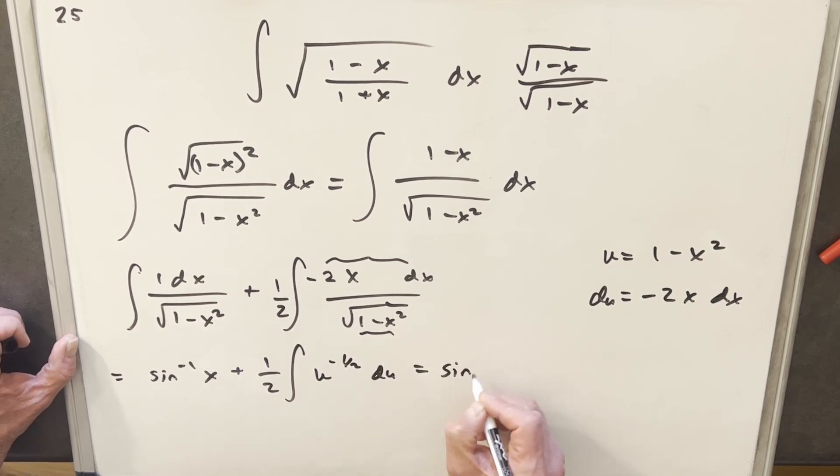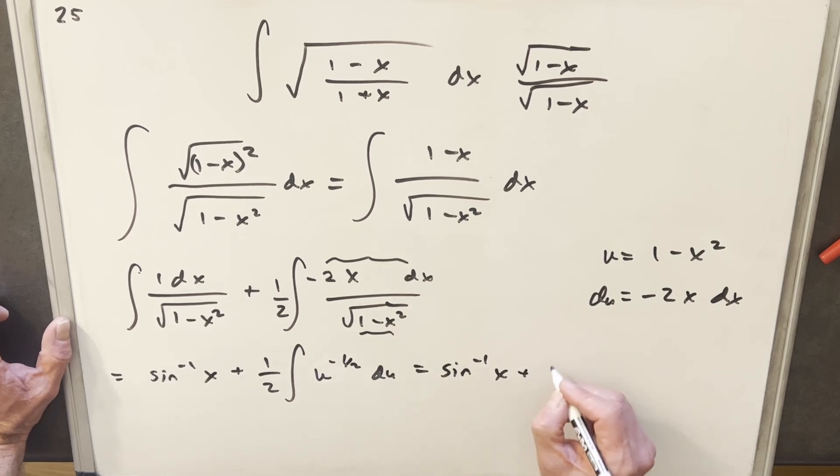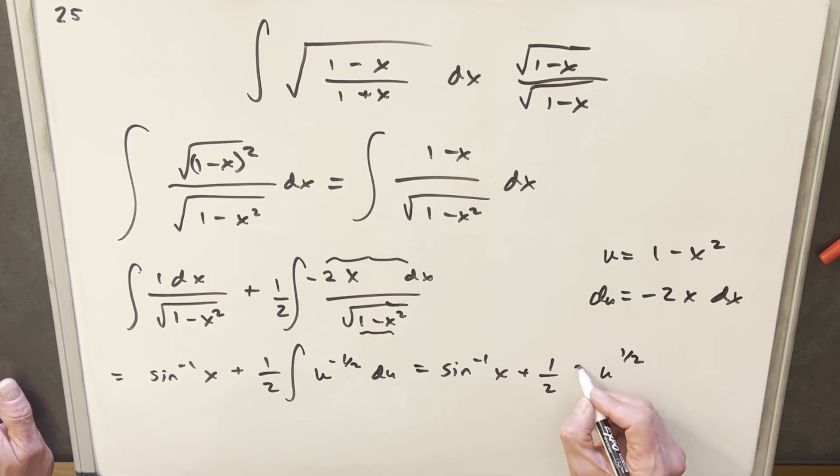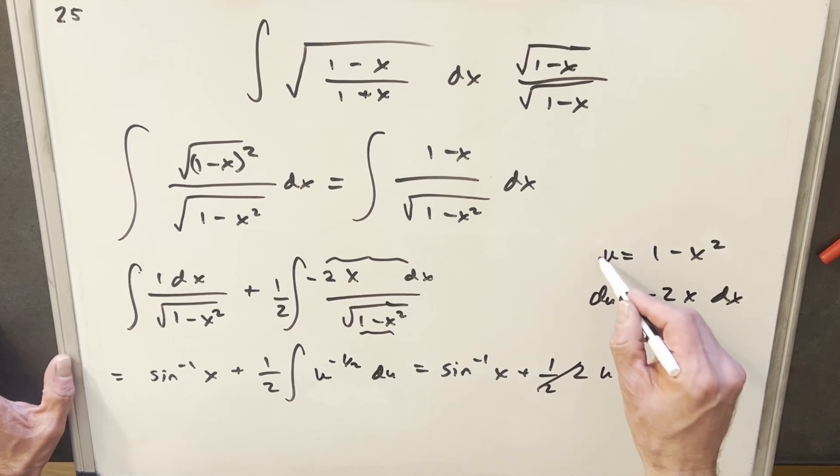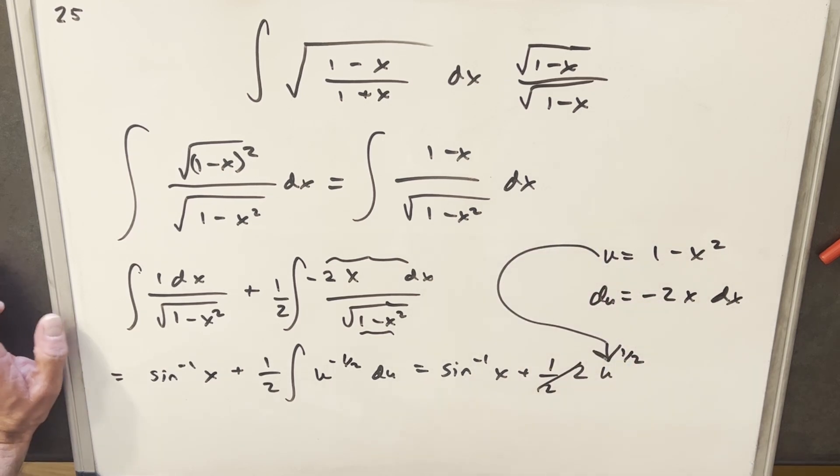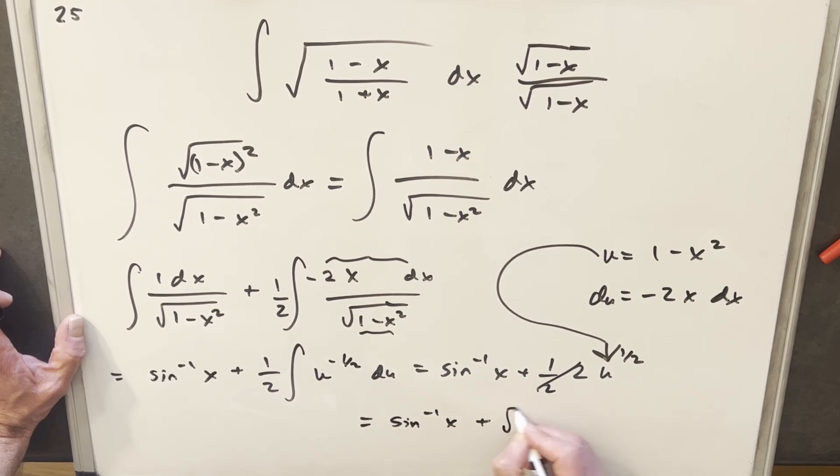And then now we're going to just take our integral. So we're going to have our plus half. Integral of this with the power rule is going to be u to the 1 half times 2. This is going to cancel here. We're just going to back substitute with our u right here. And then so our final solution is just going to be arcsine of x plus the square root of this thing, which is 1 minus x squared plus c.